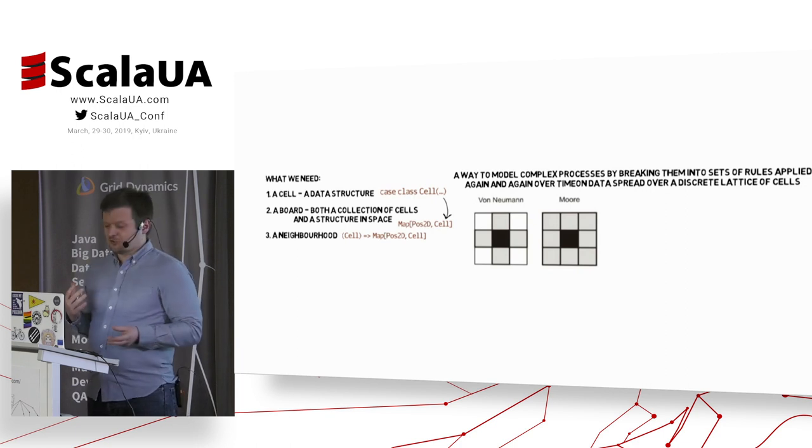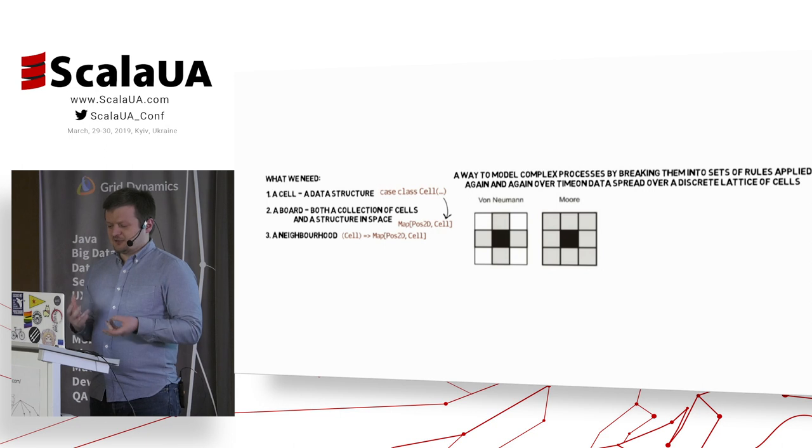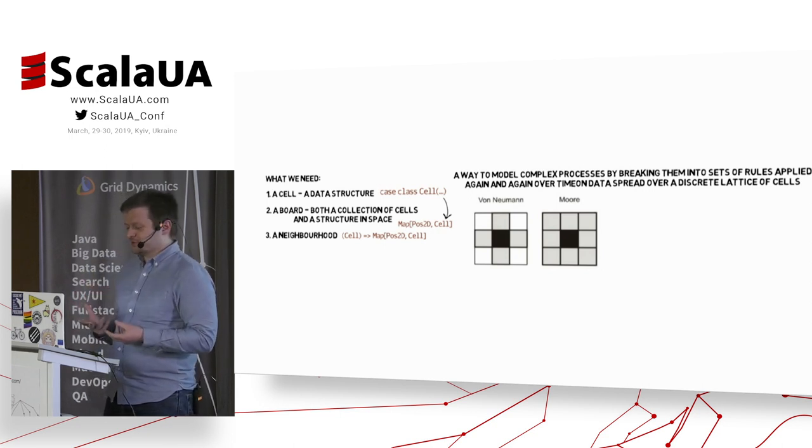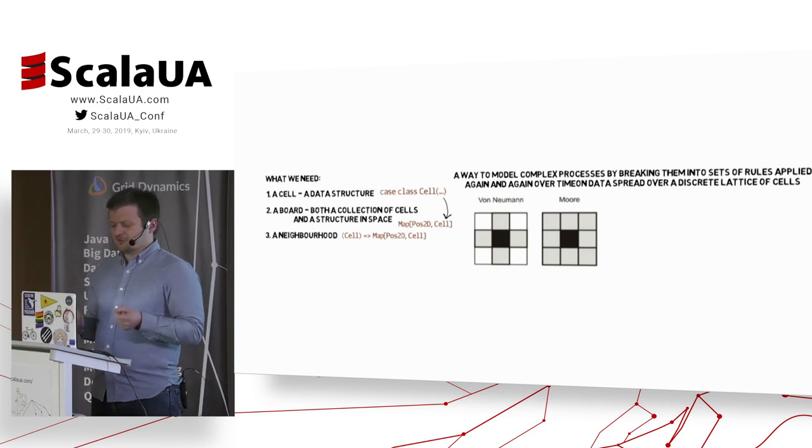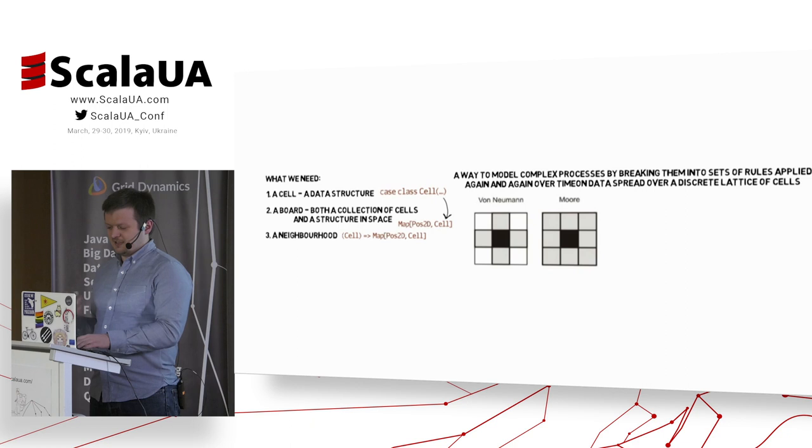Because it's a short presentation, we are talking here only about two-dimensional cells with square shapes that can be shown on the screen. So they have only four directions. And that neighborhood in Scala will be a function from the cell or most likely its position on the board to a map of positions to all the cells in the neighborhood.